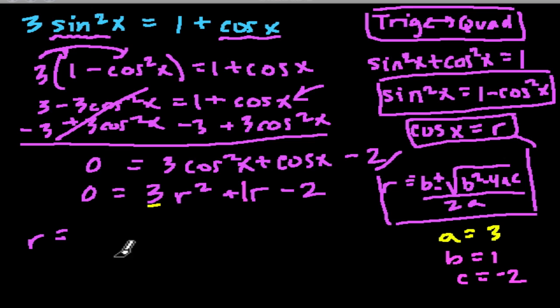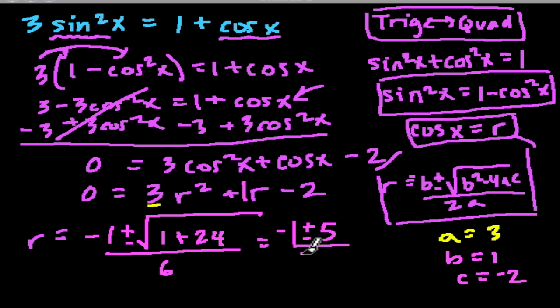And we can just plug that in. So r will equal minus 1 plus or minus b squared, that's 1, minus 4 times a times c. Well, a times c is negative 6. Negative 4 times negative 6 is positive 24. All over 2 times 3, which is 6. So I'm just going to write 6 down there. And that's going to equal negative 1 plus or minus the square root of 25, which is 5, over 6.